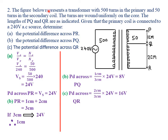Our second example: a transformer has 500 turns in the primary and 50 turns in the secondary coil. The turns are wound uniformly on the core. The lengths of PQ and QR are as indicated in the diagram. The primary coil is connected to a 240 volt AC source. Determine: part A, the potential difference across PR.